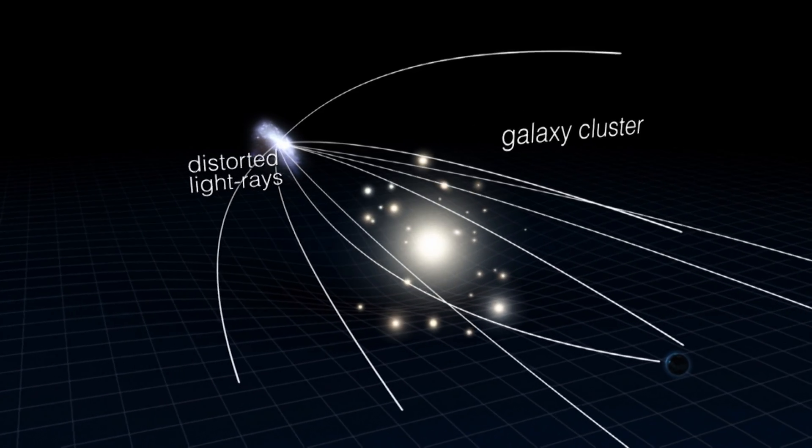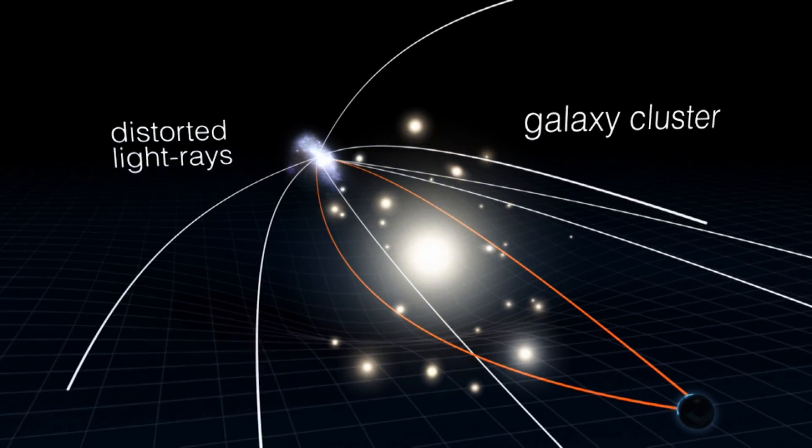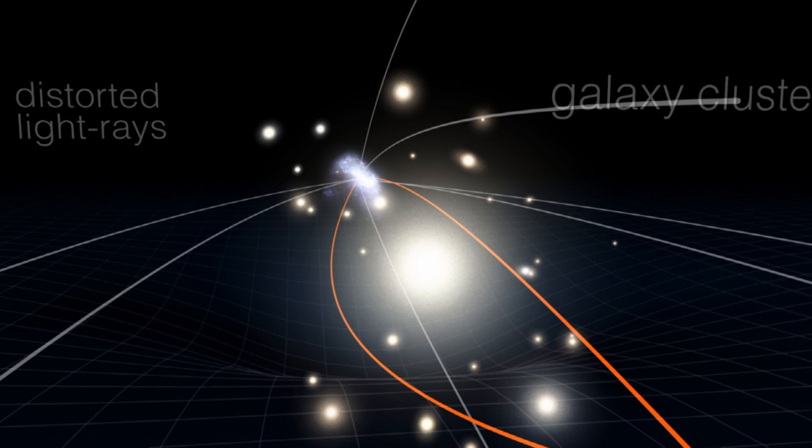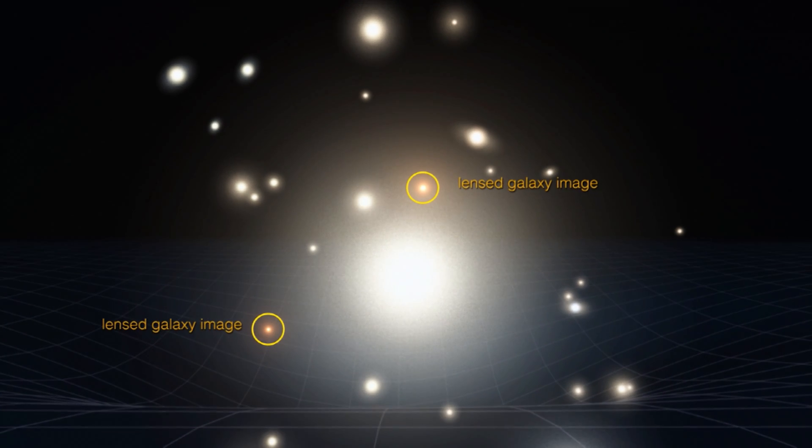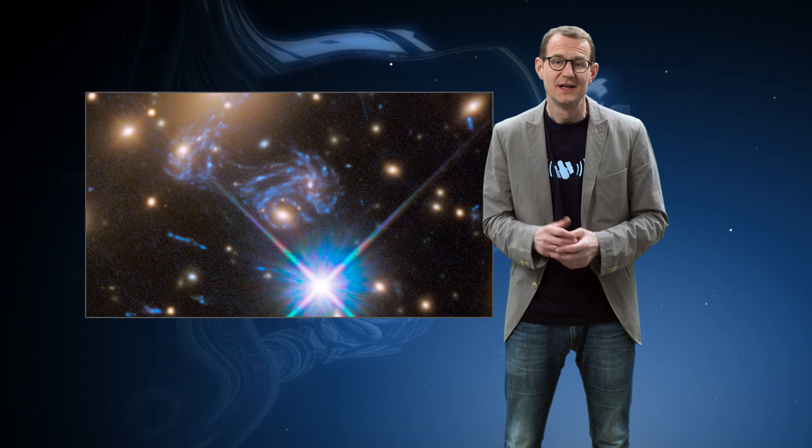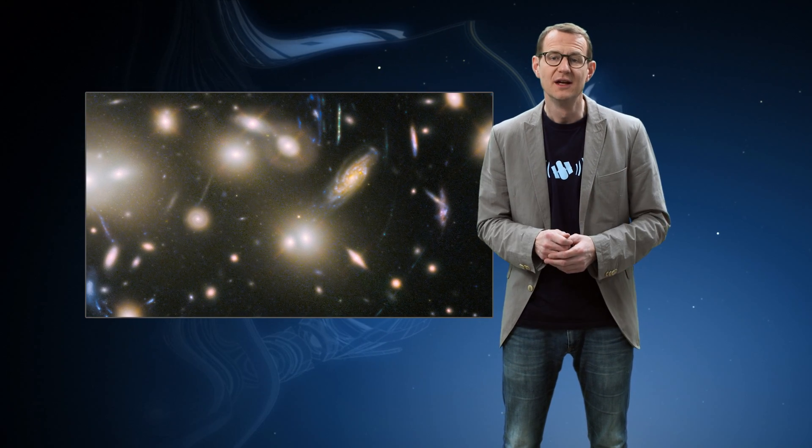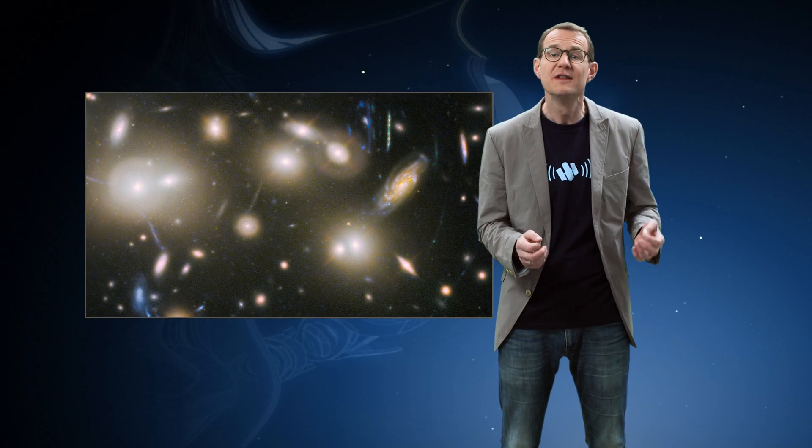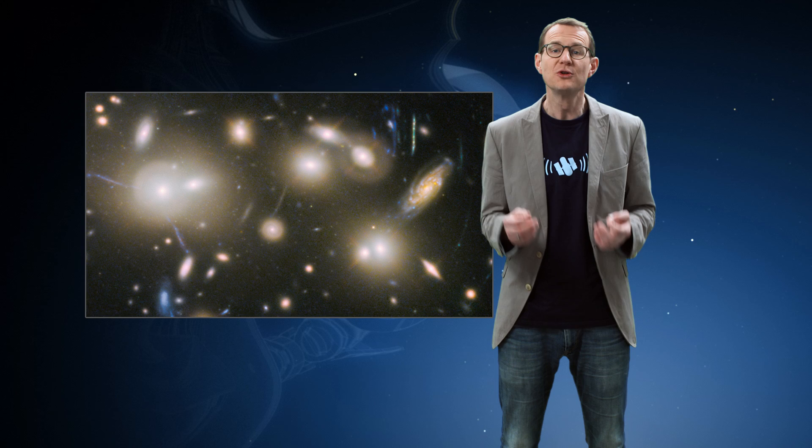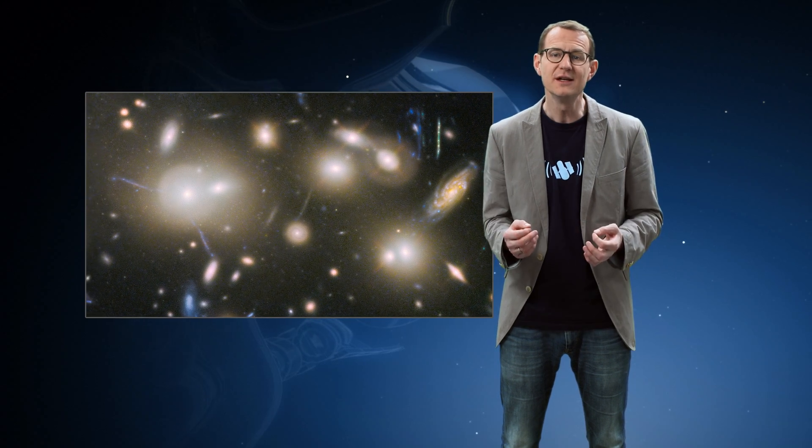The enormous amount of mass in a galaxy cluster means that it bends the space around it and acts like a gigantic magnifying glass. This process is known as gravitational lensing and it allows astronomers to study objects behind the cluster in the very distant universe that would normally be too faint to see, even for Hubble.